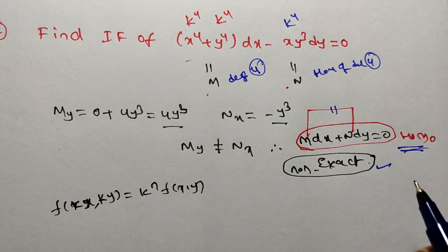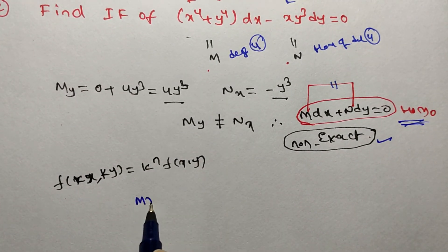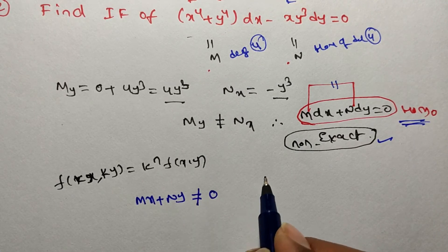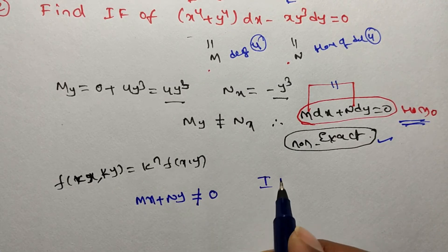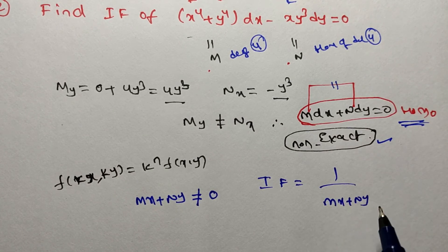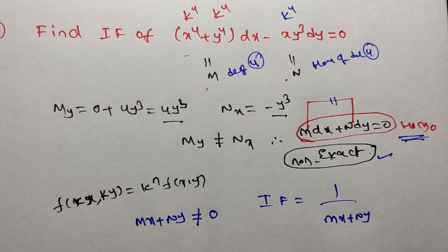So we have to verify mx plus ny. If mx plus ny is not equal to 0, then the integrating factor is 1 by mx plus ny. Remember, friends, it should be not equal to 0. If it equals 0, you cannot apply this method — you would have to go for another method.